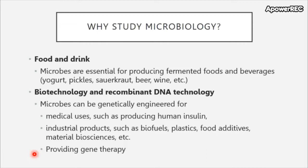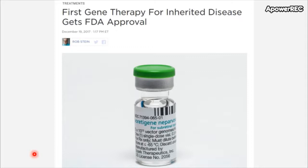Microbes also provide gene therapies for humans. Here we have Luxturna, a treatment for an inherited retinal disease that causes vision problems. This gene therapy uses an adeno-associated virus — a type of virus benign to humans — as a shuttle to move in genes that correct the mutation in patients with this disease. Remember we talked about viruses needing a shuttle? That's what you see here.